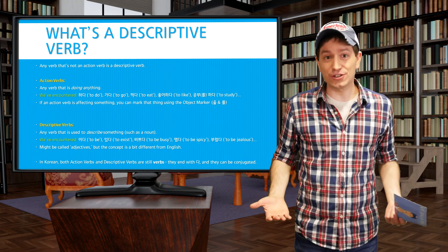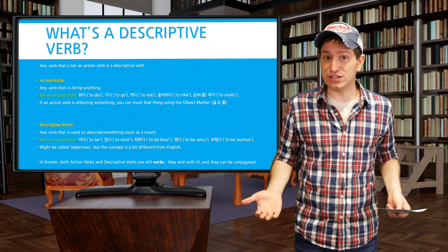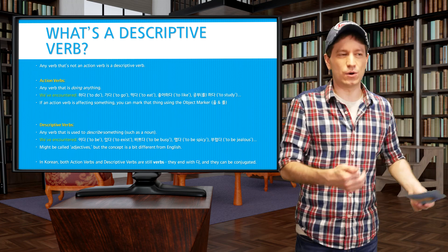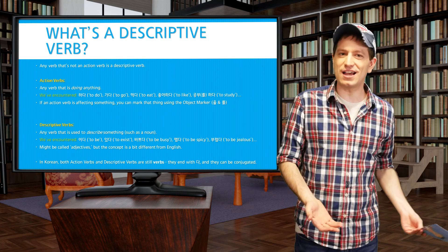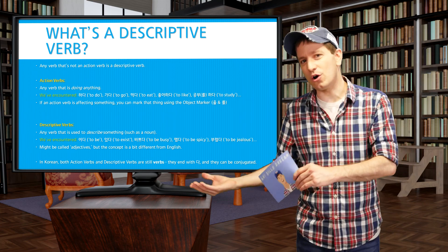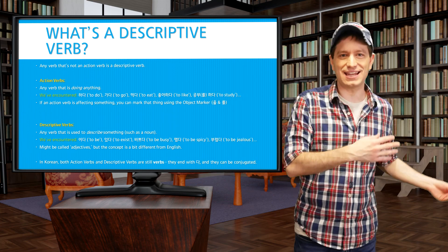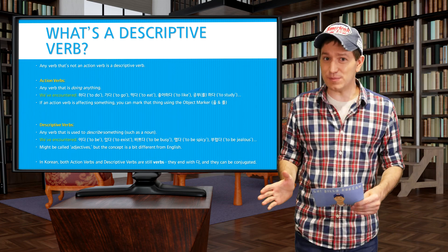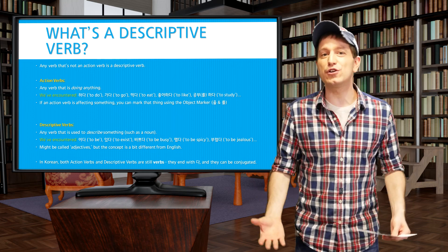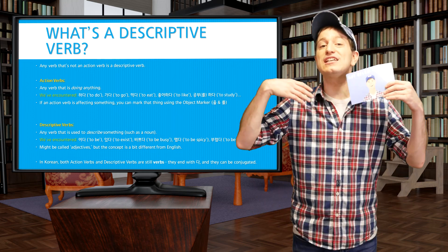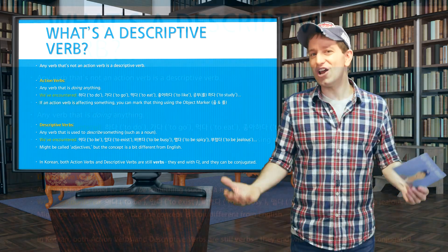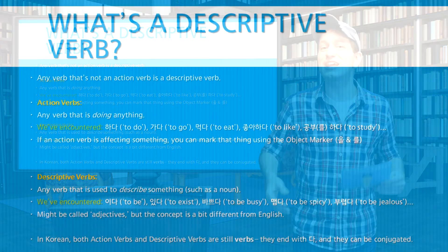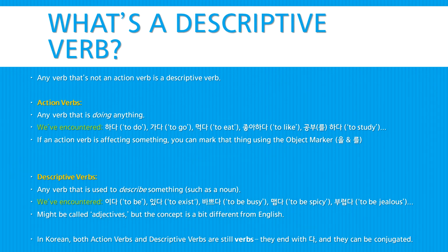Now we learned a lot of action verbs, for example, to do, or to love, or to study, or to go, or to make. Well, descriptive verbs are verbs that are actually describing things, not talking about an action.